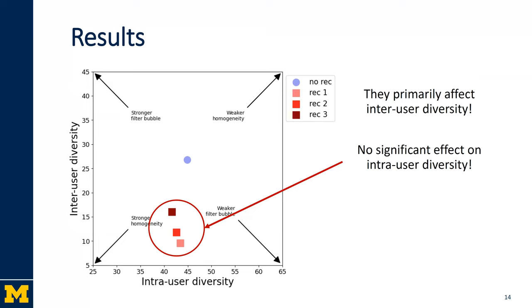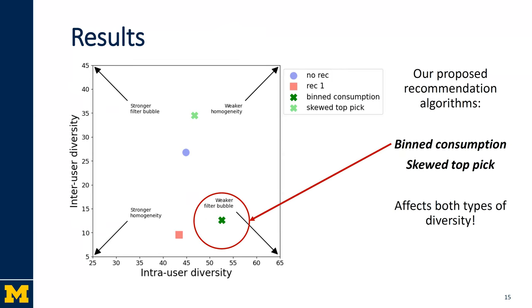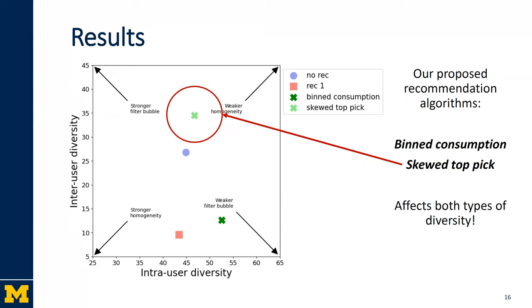Given this, we ask ourselves: is it possible to design recommendation algorithms that will affect both types of diversity simultaneously? We propose two such recommendation algorithms. The first one, being consumption-based recommendation, drives users towards items that are popular within their own genre. The second one, skewed top-peak-based recommendation, drives users towards niche items universally.